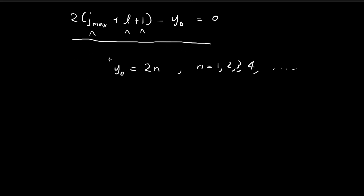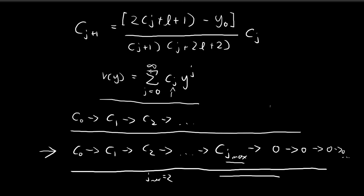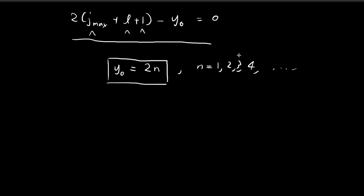This is a very important result: y₀ must equal some even integer 2n. We can choose what n will be, and for every different choice we get a different value of y₀, which corresponds to a different v(y) for every choice we make.